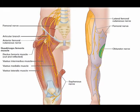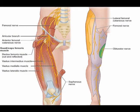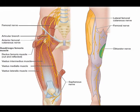The femoral nerve again innervates the anterior compartment of the thigh and originates from spinal nerves L2, L3, and L4.